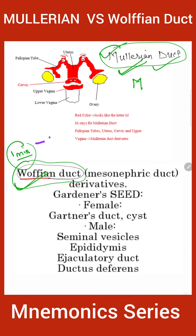So what structures come in it? If you go from the bottom, you will find the upper vagina, then uterus, then fallopian tube. So: fallopian tube, uterus, cervix, and upper vagina. Very easy!